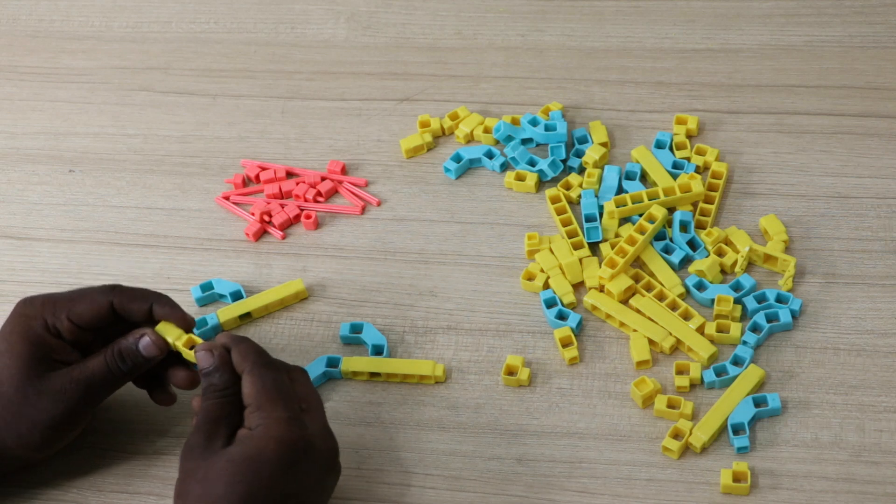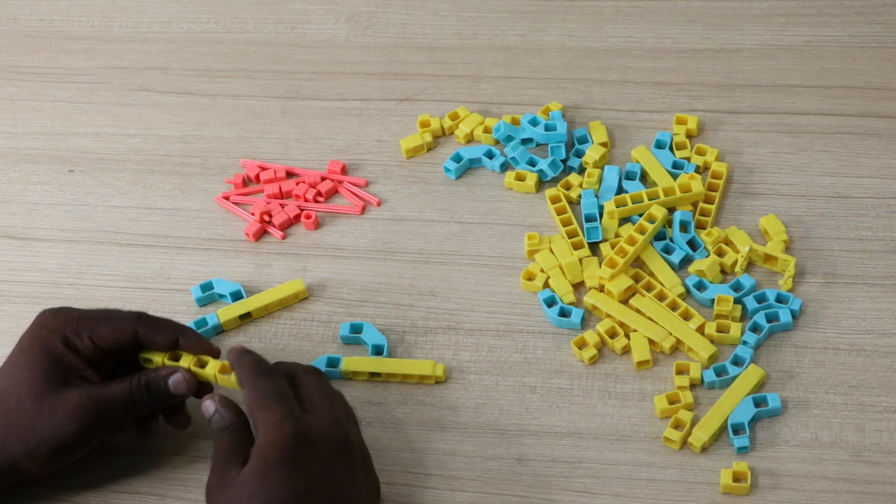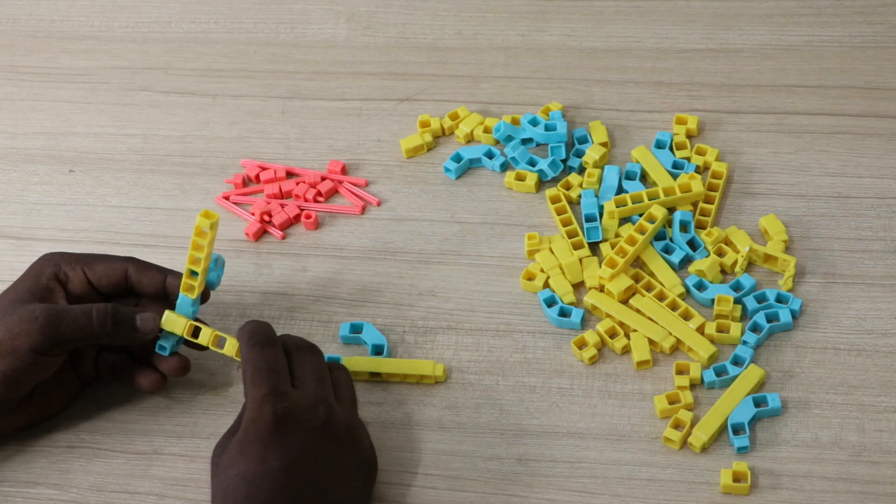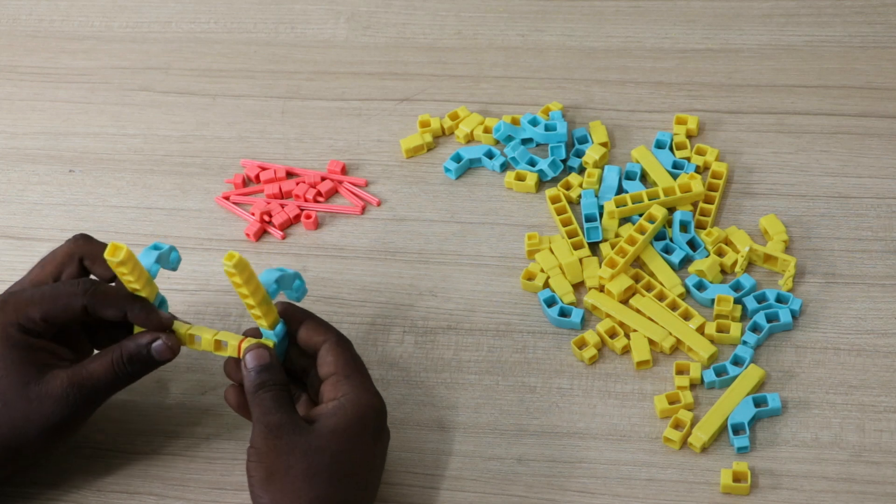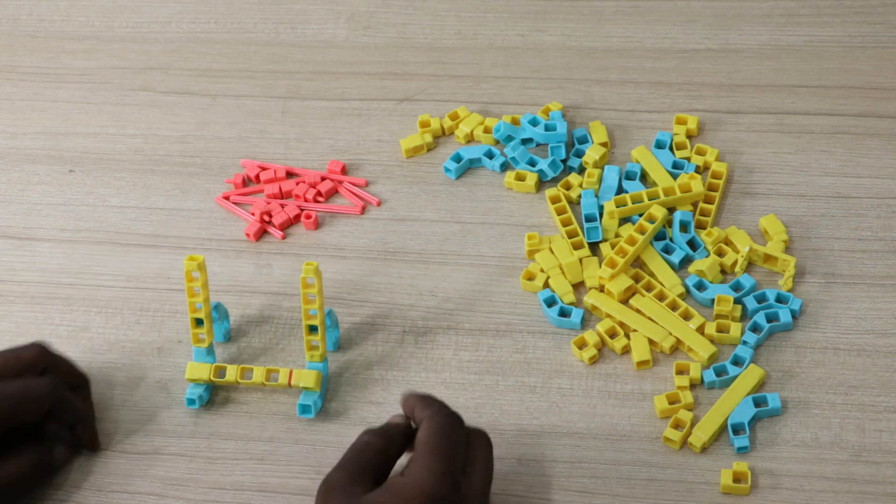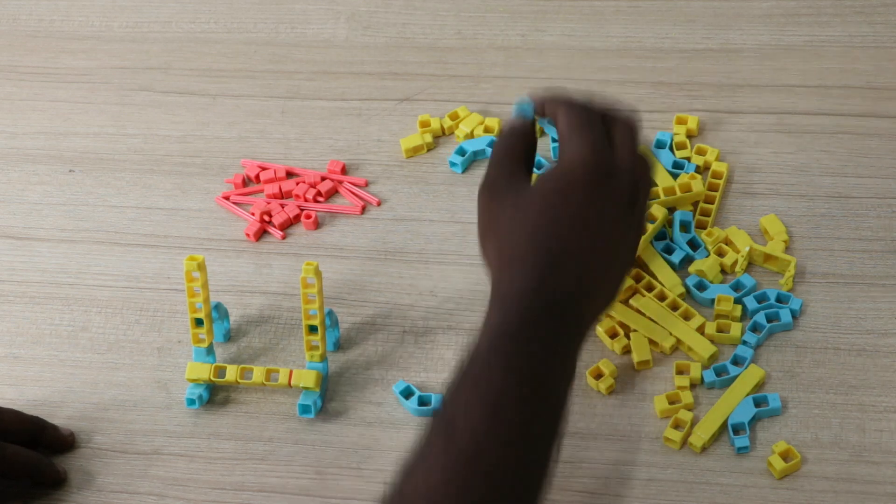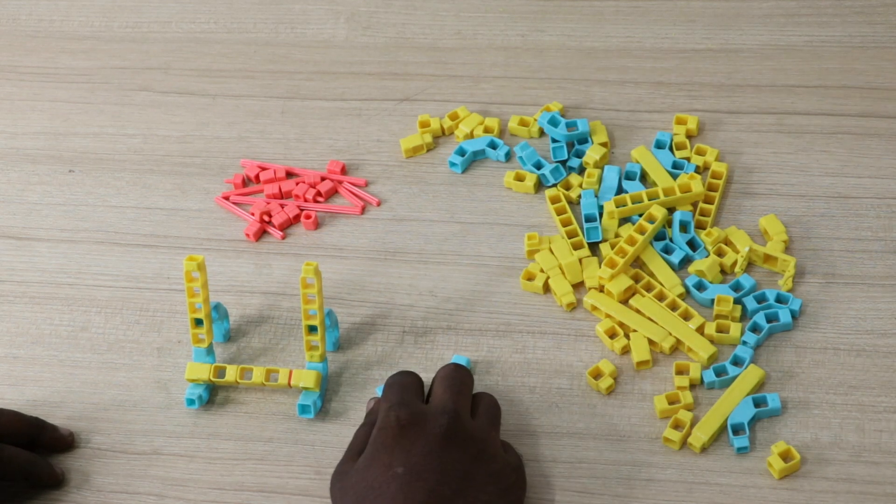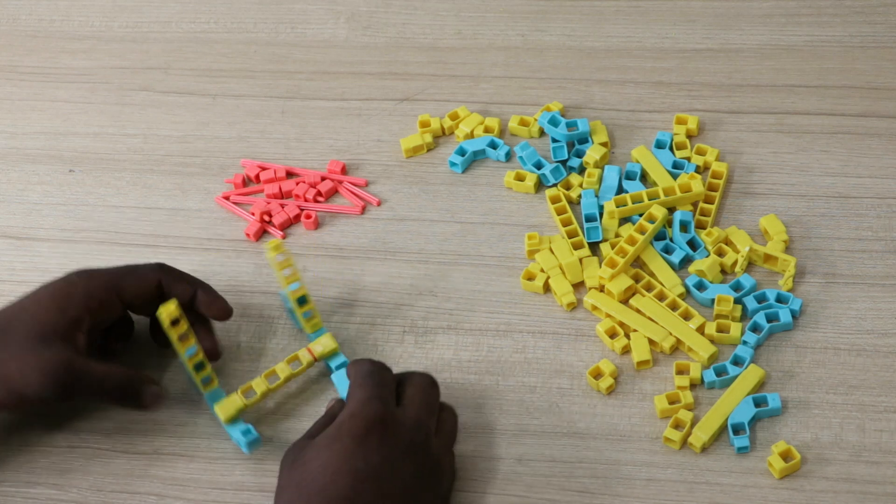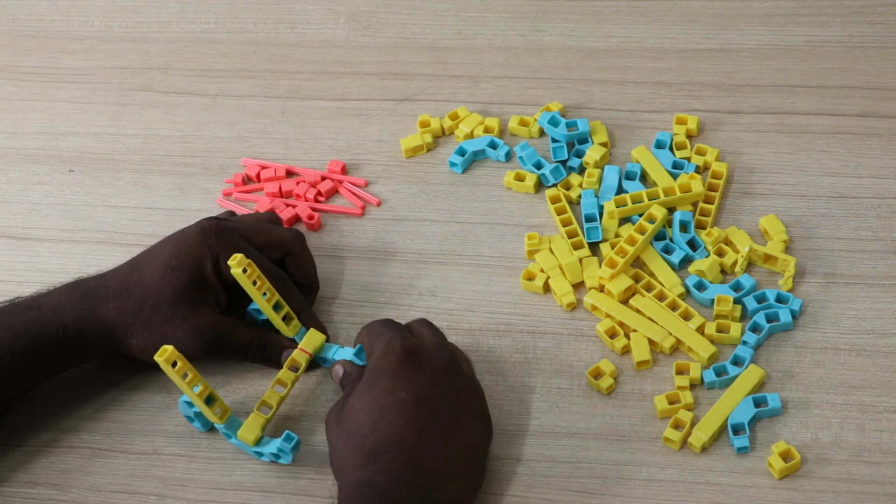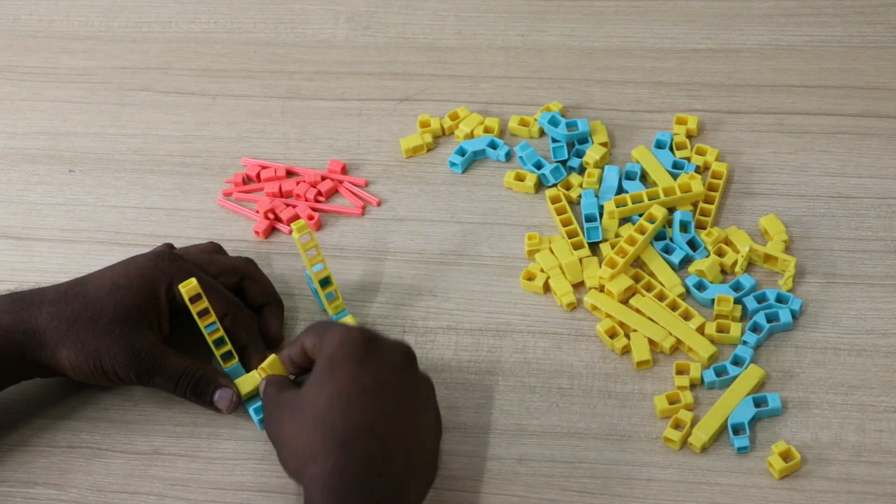Then attach 1-hole elbow on both the ends. Now take 2-2-hole elbow and join it to the structure as shown. Then attach 2-1-hole elbow as shown.